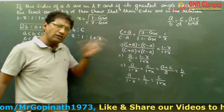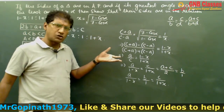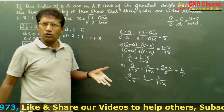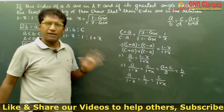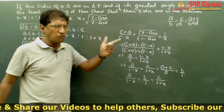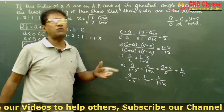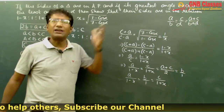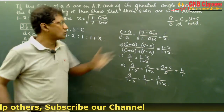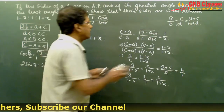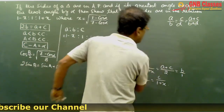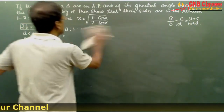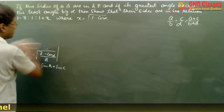Both problems on the sine rule property have been covered. In the next lecture, we will move on to the second property — the cosine rule — and do problems on that.